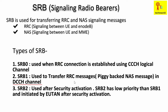SRB2 is used only after security activation. As we know, there are two types of security: RRC-level security and NAS-level security. Only after security activation is completed will SRB2 be used. SRB2 has a lower priority than SRB1, so the order is: SRB0 first, then SRB1, then SRB2. Before security activation is completed, SRB2 will not be used.